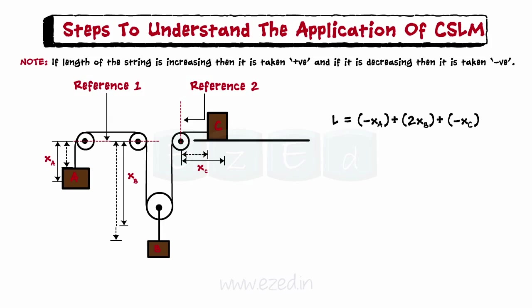Step 3: on differentiating the above equation with respect to time, we get the relation between the velocities of the particles. Step 4: again on differentiating, we get the relation between the accelerations of the particles.